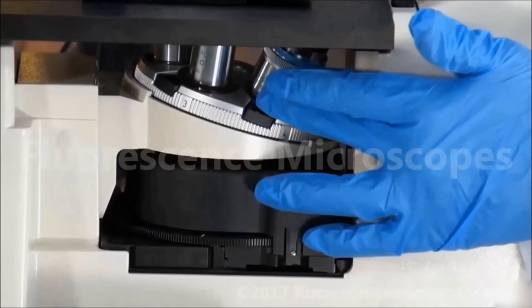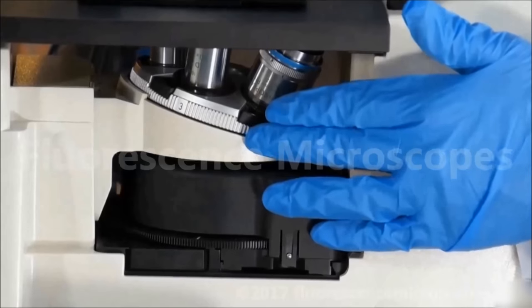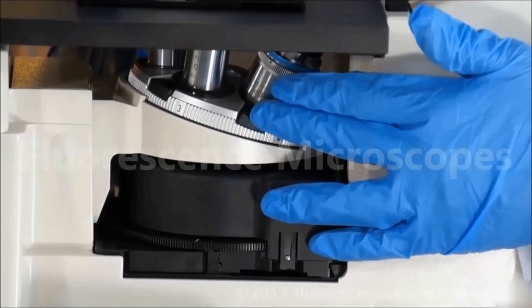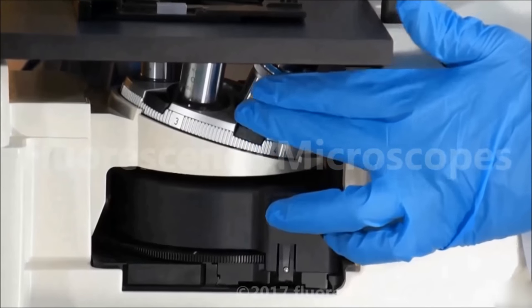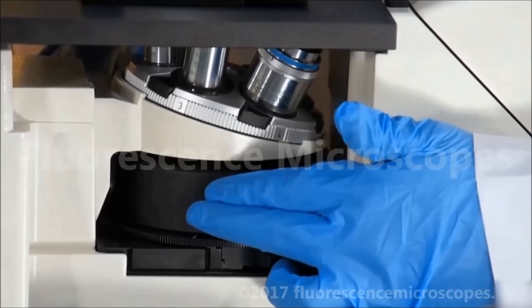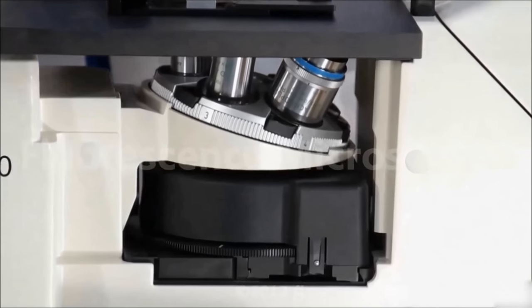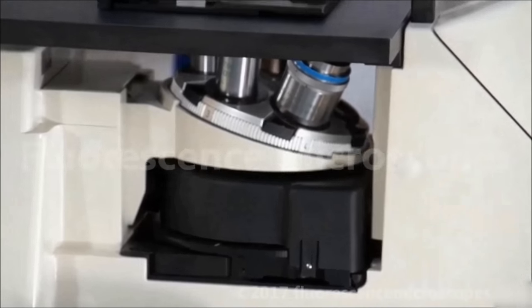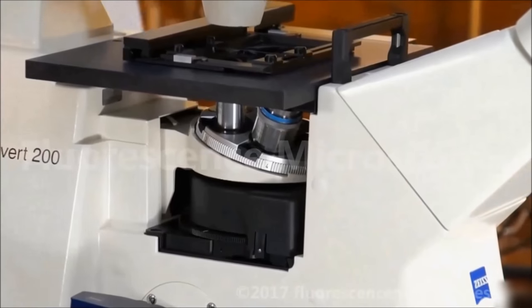This will be compared to a version that's... This is a 200, Axiovert 200, there's an Axiovert 200M, which you would have motorization on the objective turret, as well as the reflector turret, as well as shutters, fluorescent shutters. You can also do XY stages that are mechanical.